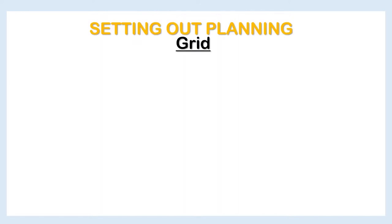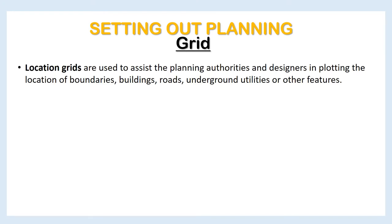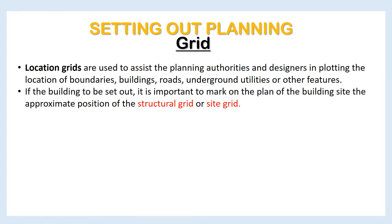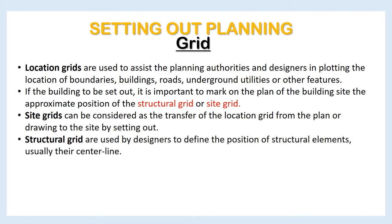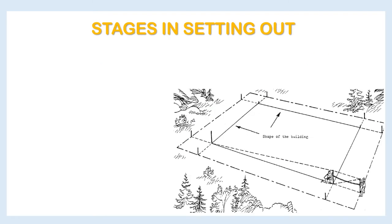Location grids are used to assist the planning authorities and designers in plotting the location of boundaries, buildings, roads, underground utilities, or other features. If a building is to be set out, it is important to mark on the plan the approximate position of the structural grid or site grid. Site grids can be considered as the transfer of the location grid from the plan or drawing to the site by setting out. Structural grids are used by designers to define the position of structural elements, usually their center line.